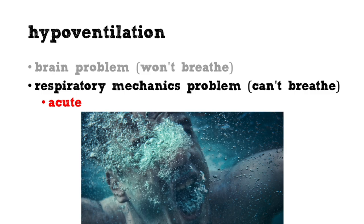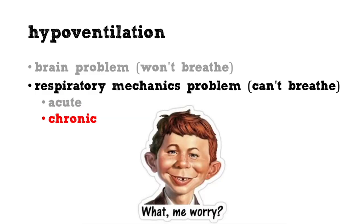Conditions of this nature include epiglottitis, acute transverse myelitis, Guillain-Barré syndrome, neuromuscular problems like periodic hypokalemic paralysis — some sort of acute neuromuscular or airway catastrophe. These patients are not really going to present with hypoxemia usually; they will present with almost an asphyxial problem.